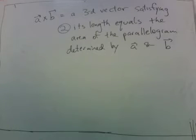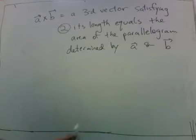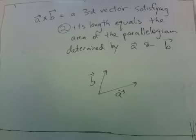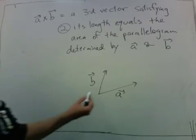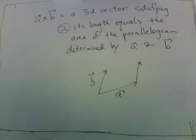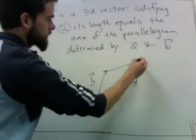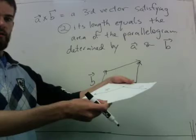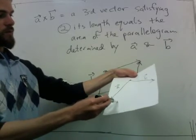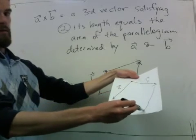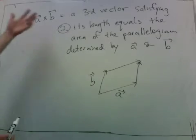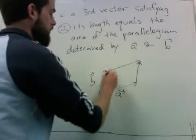The second property is that its length equals the area of the parallelogram determined by A and B. If A goes this way and B goes this way, A plus B is the diagonal and it determines a parallelogram. Even if A and B are floating in space, they still determine a parallelogram, and the cross product's length will be the area of this parallelogram.